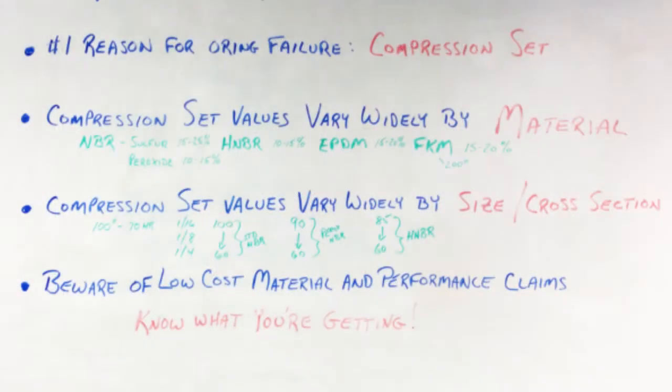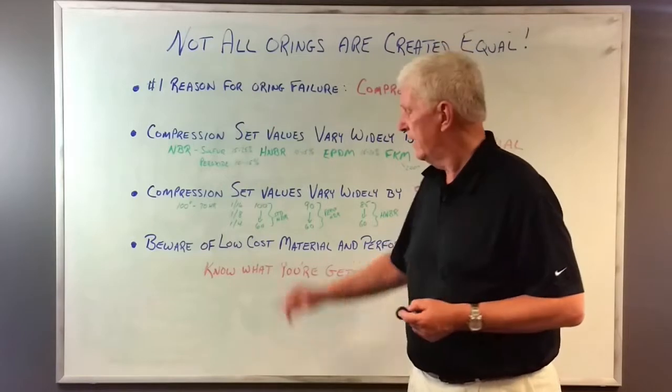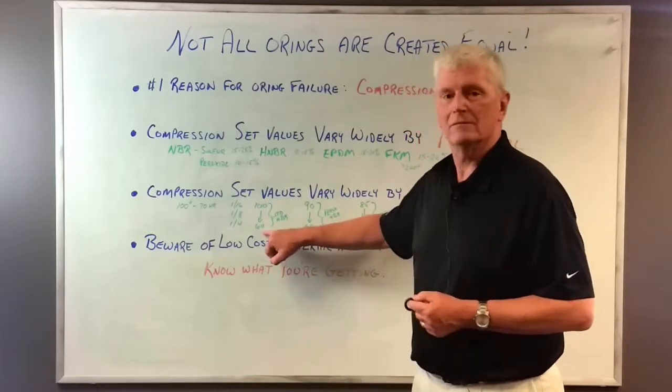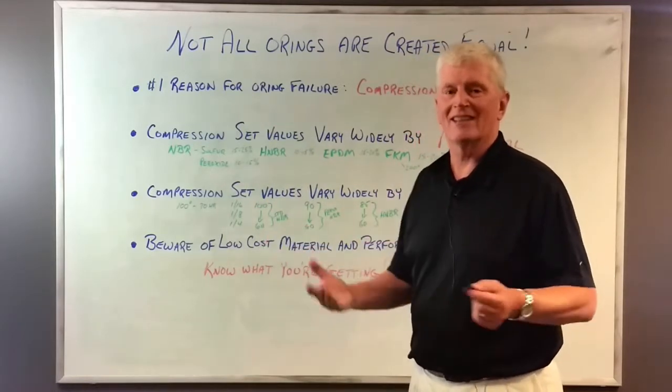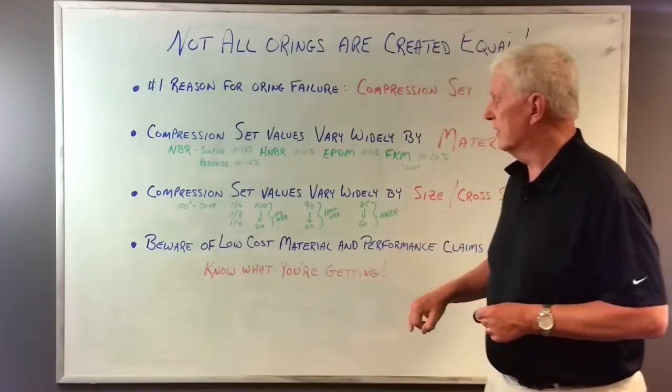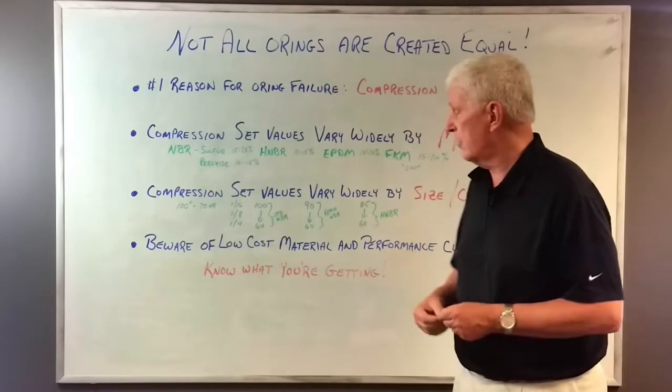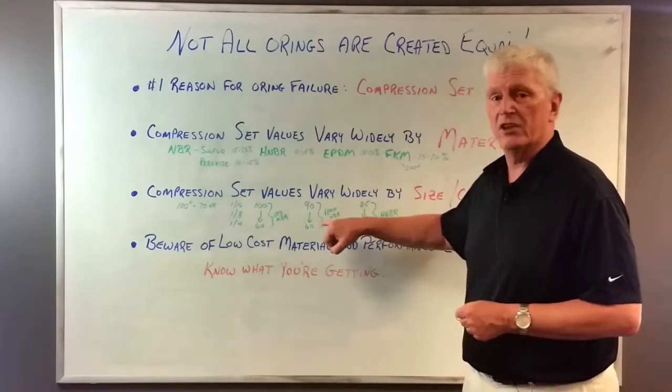At 100 degrees for 70 hours, a standard NBR, a 16th cross-section, can take a 100 percent set. The fatter or the thicker cross-sections take a 60 percent set. You go to a peroxide cure. The thicker cross-sections, not quite as much difference, but when you get to those thin cross-sections, there's a lot of applications out there that use the small cross-sections. 90 percent.